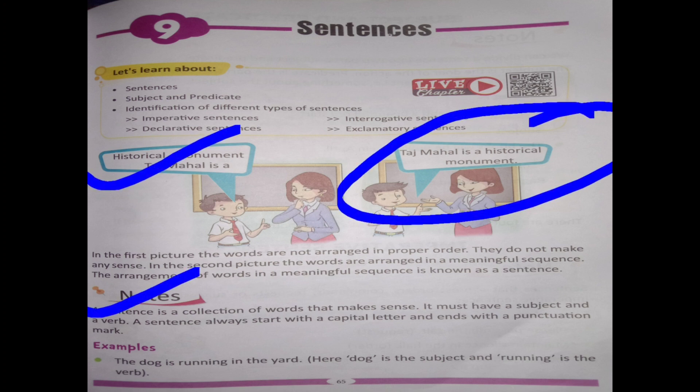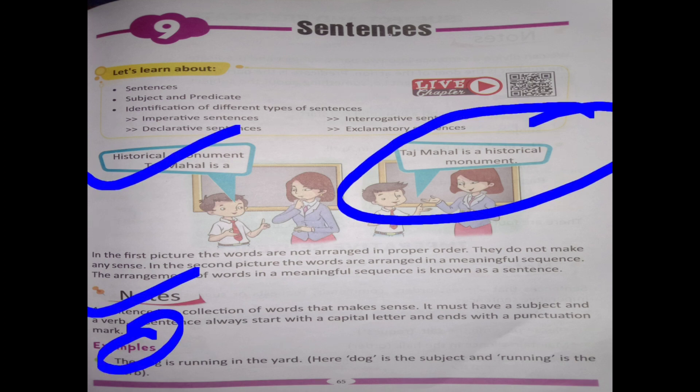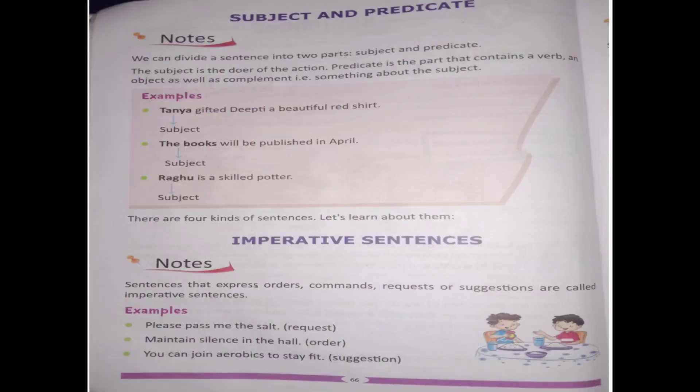A sentence is a collection of words that makes sense. It must have a subject and a predicate. A sentence always starts with a capital letter and ends with a punctuation mark. For example: 'The dog is running in the yard.' Here, 'the dog' is the subject and 'is running in the yard' is the predicate.